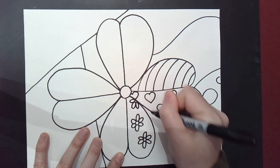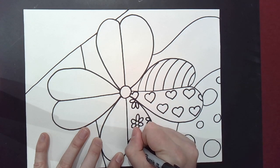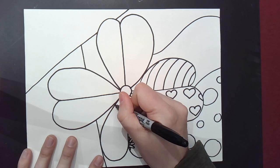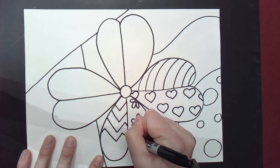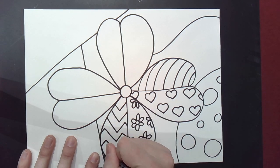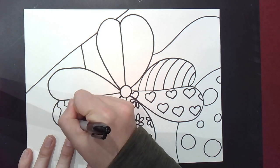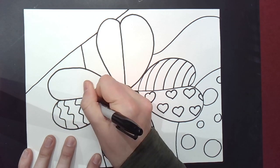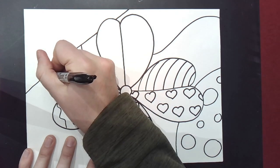You can come up with your own patterns. You can also take a look at some of Romero Brito's paintings and copy some of what he did. I'm going to do some zigzag lines. And I'm going to do some wavy lines.